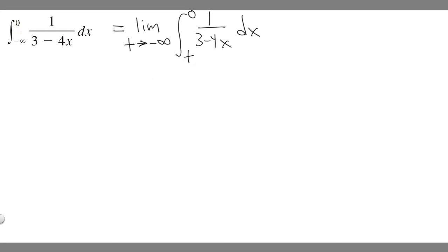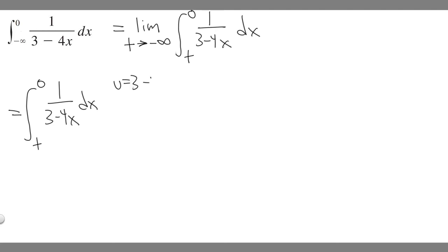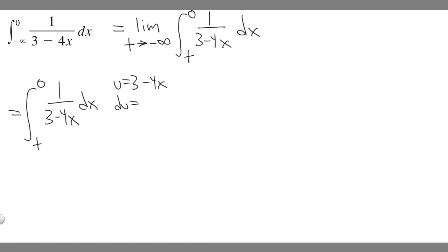So now what we're going to want to do is just solve this integral right here. We have the integral from t to zero of one over three minus four x dx. The way we're going to solve this is by using u-substitution. If we say u equals three minus four x, then du is going to be: the derivative of three is zero, and the derivative of minus four x is just minus four. So it's just going to be minus four dx — so that's du.